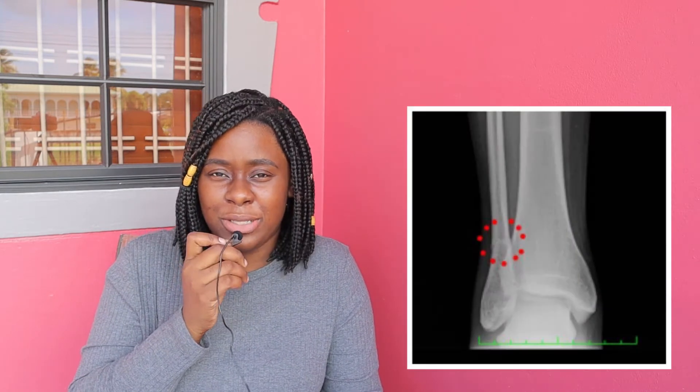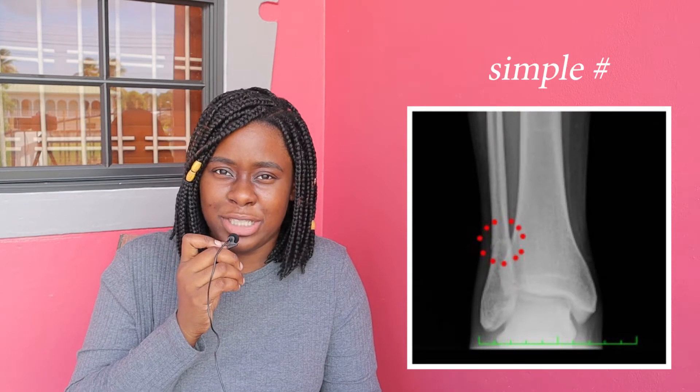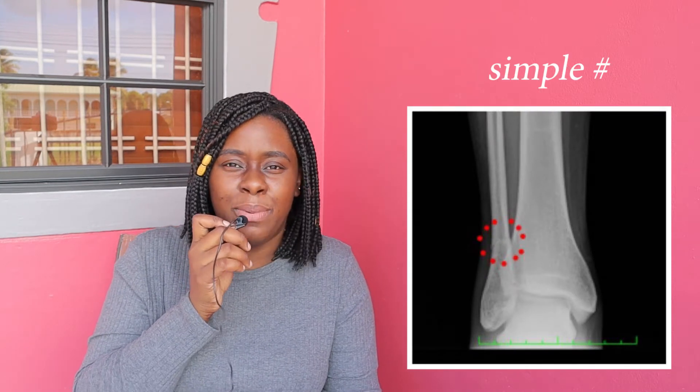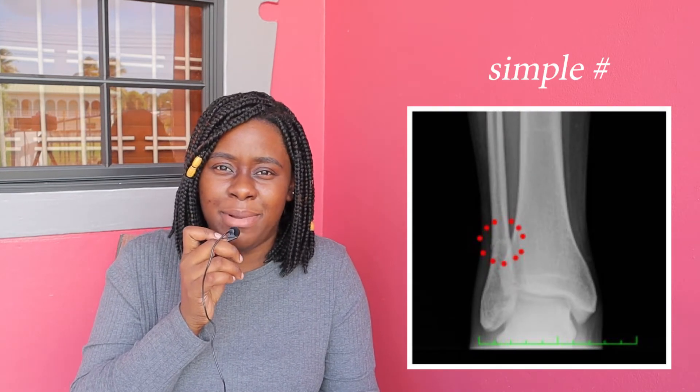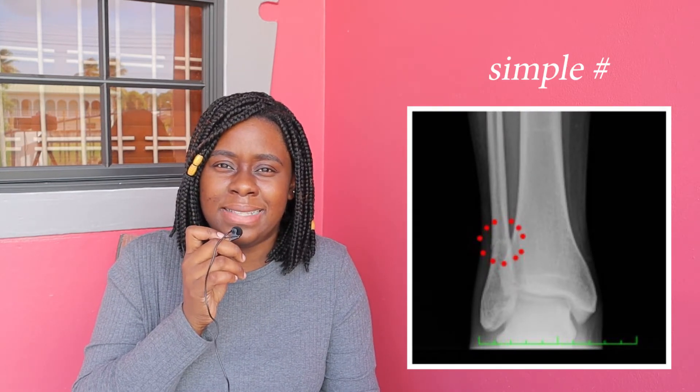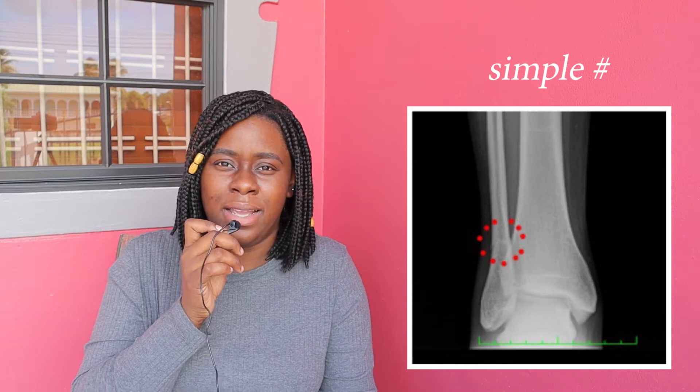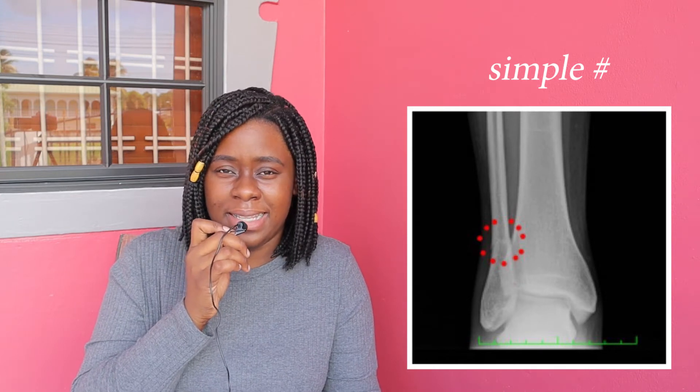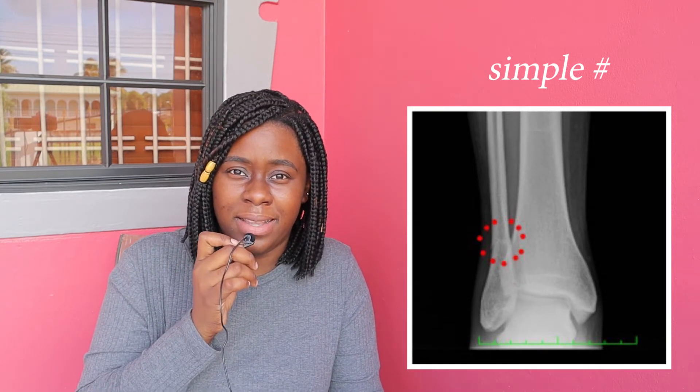The next fracture is of the right distal fibula, called a simple fracture. We can see it is non-displaced — the bone still lines up — but there is a dark lucent line signifying a discontinuation in the bone.